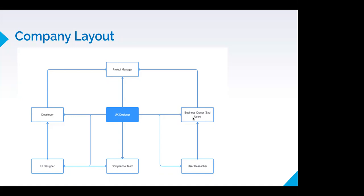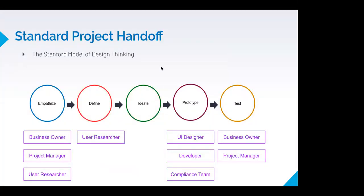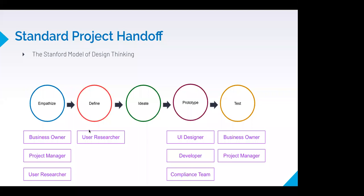I've taken the Stanford model of design thinking and applied which stakeholder you interact with at each section. In the Empathize section you're doing user interviews, usability testing, surveys, and reviewing legacy systems — getting feedback from your business owner, project manager, and user researcher. In the Define section you're focused on UX artifacts, working with user researchers to synthesize data into journey maps, user flows, empathy maps, affinity diagrams, and personas — taking your data and synthesizing it to understand patterns of behavior.